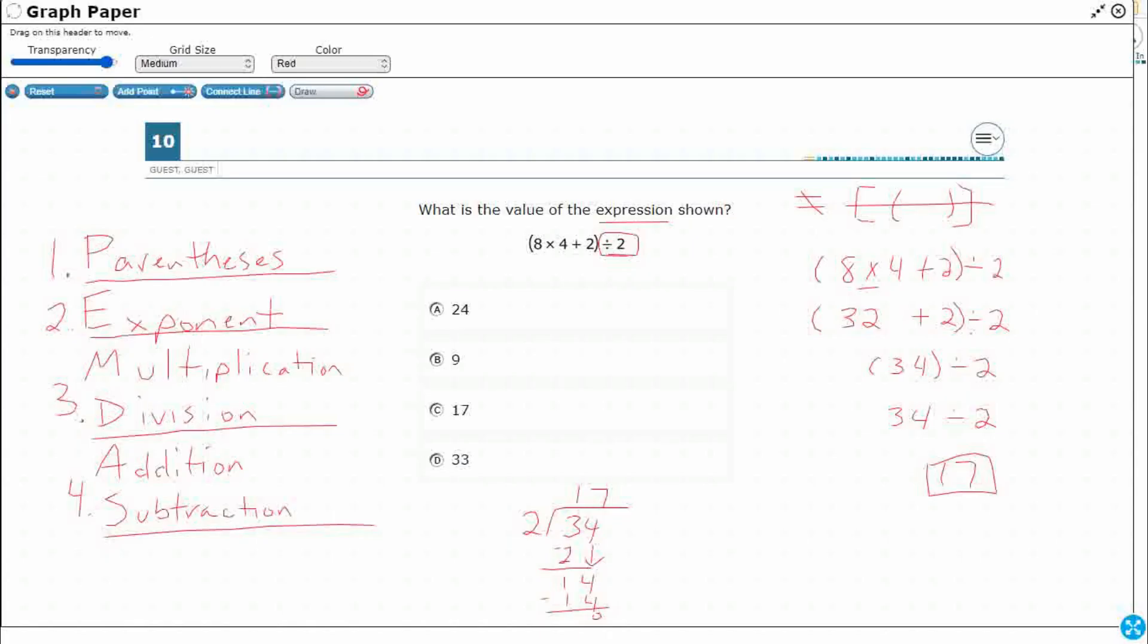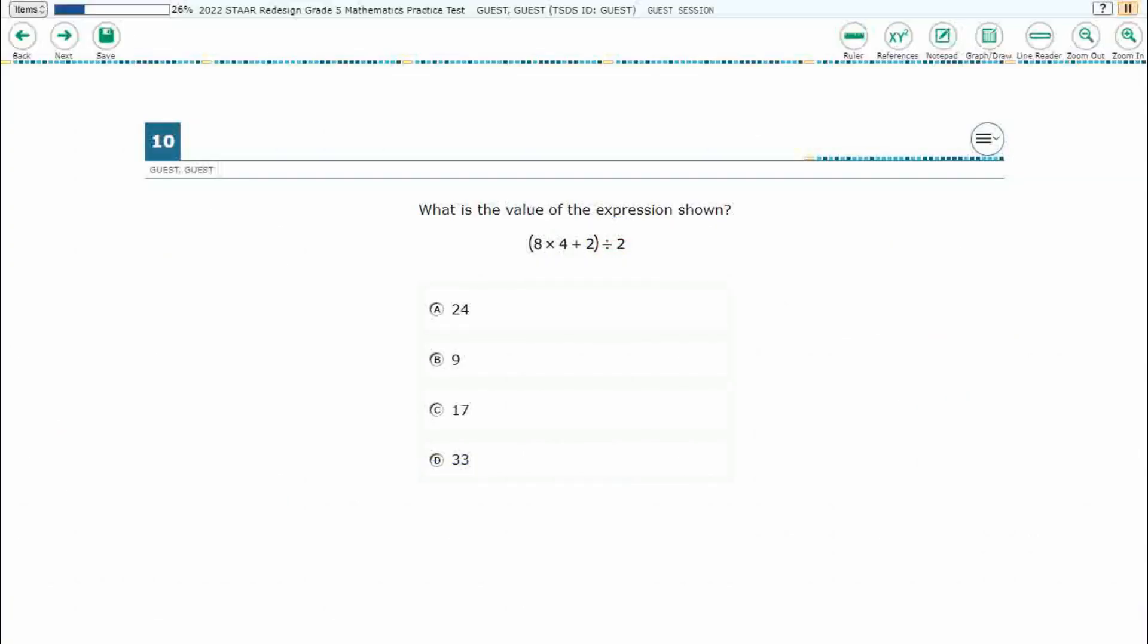right, you can get some of these wrong answers. So if I were to ignore the parentheses and do two divided by two first, right, that'd be eight times four, two divided by two is one plus one, eight times four is 32, right? And 32 plus one gets you 33. So you see how you can get some of these incorrect answers if you apply these incorrect, but we did it correct. So our answer here is going to be C.